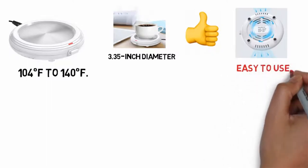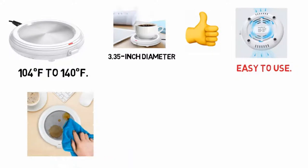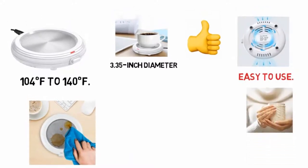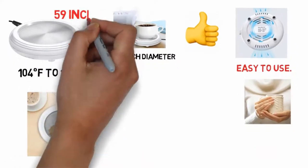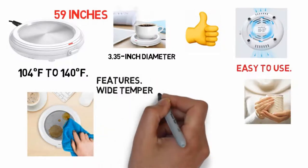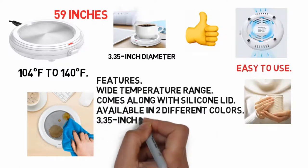The food grade silicone lid ensures that you can cover your cup of coffee. The ease of use and the cord of 59 inches which comes along with it make it a pretty good option. Features: wide temperature range, comes along with silicone lid, available in two different colors, 3.35 inch diameter, waterproof design.